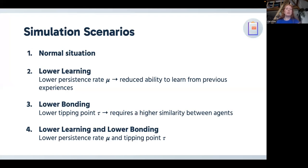So we will simulate four different scenarios to test our model. We first have our normal situation that will function as a baseline. Then we have a scenario where we have lower learning. So we put our persistence rate lower, which will represent a reduced ability to learn from previous experiences. We have a third scenario, which is lower bonding. So we lower our tipping point. And this means that a higher similarity between agents is required. And lastly, we will combine scenario two and three with lower learning and lower bonding.